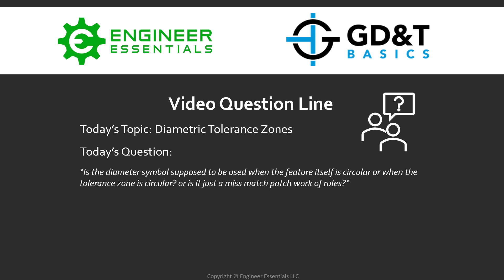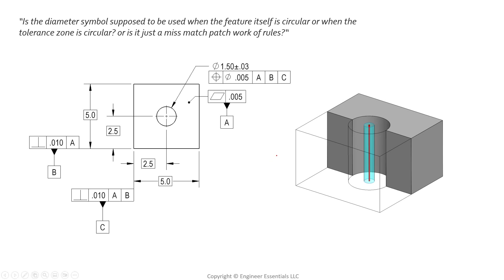Hey everybody, Jason here again with GD&T Basics. Today on the video question line we're going to cover another student question. The topic is diametric tolerance zones, and the question is: is the diameter symbol supposed to be used when the feature itself is circular, or when the tolerance zone is circular? It's not quite a mismatch patchwork of rules, but there are some things to know. We're going to go over all the different scenarios you'll encounter when using diametric tolerance zones.